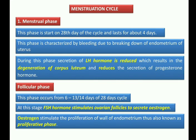We will start from the menstruation cycle. As discussed in the last video, there are four phases of the menstruation cycle: menstrual phase, follicular phase, ovulatory phase, and luteal phase.